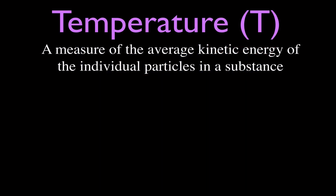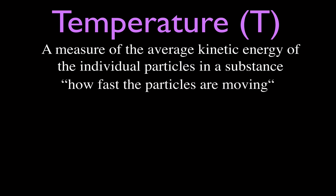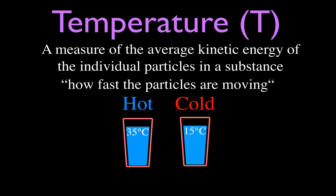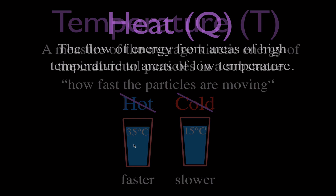Before we get to heating curves, let's do a quick review of temperature, energy, and heat. Temperature is a measure of the average kinetic energy of the individual particles in a substance. What it really tells us is how fast the particles are moving. If we have two substances at different temperatures — 35 degrees Celsius and 15 degrees Celsius — the molecules in the higher-temperature substance are simply moving faster.